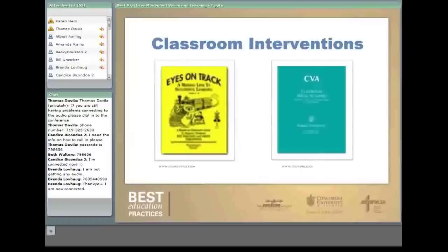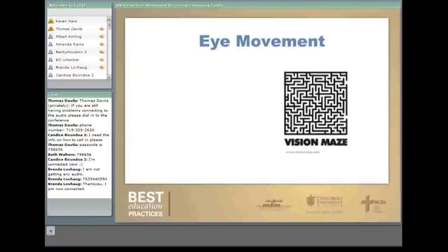As far as classroom interventions, there are some books available — a very good one is Eyes on Track, which is very user-friendly, explains vision difficulties well, and provides activities. You can also make or purchase maze books, beginning with simple ones and progressing to more difficult. You could put mazes in your classroom or in the hallways for children to use while waiting in line.